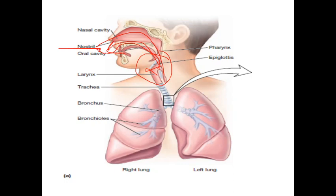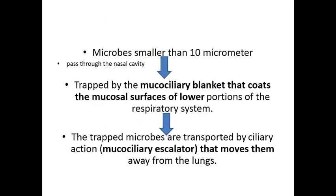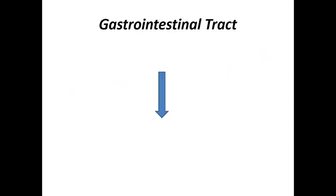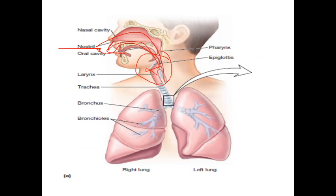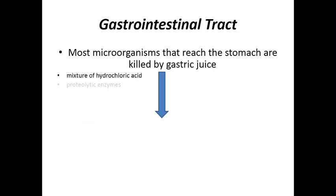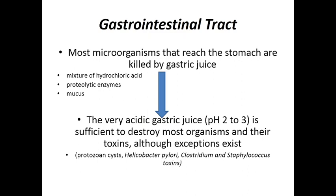If some microorganisms enter the lower portion of the respiratory tract, there is a specialized cell called the alveolar macrophage, present in the alveoli. This macrophage removes these microorganisms by the process of phagocytosis. Next, let's consider how defense mechanisms work in the gastrointestinal tract.